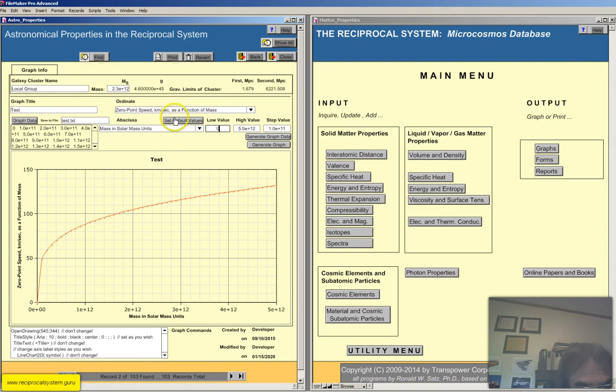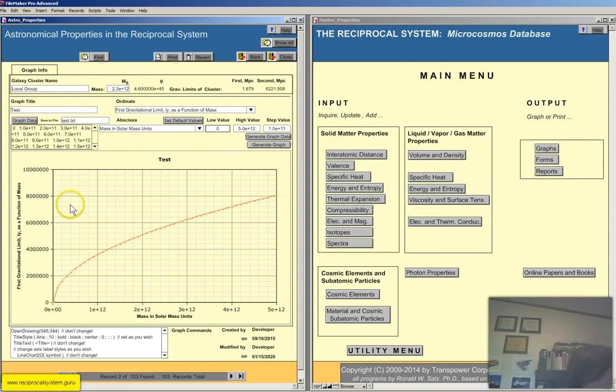Mass in solar units, set default values, generate the graph data, generate the graph. So let's just go to the next one. First gravitational limit is a function of mass, and of course it makes sense to go there. Set defaults, same thing.